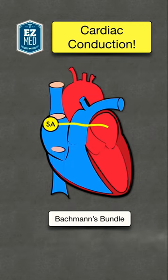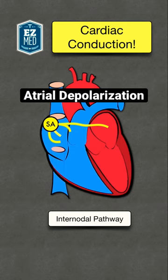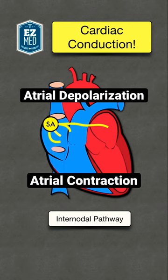The action potential generated by the SA node will travel to the left atrium using Bachmann's bundle. The electrical impulse will also travel through the right atrium using the internodal pathways. As the electrical impulse travels through the atria, it causes the atria to depolarize and contract.